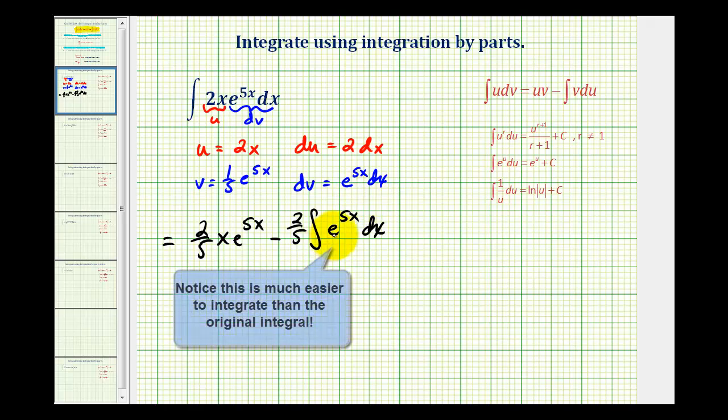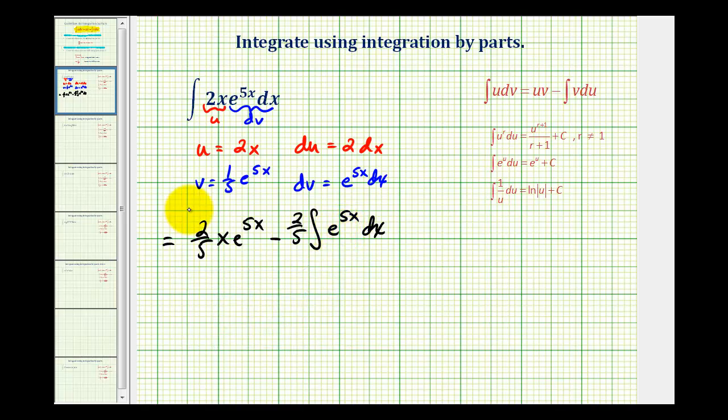And now we need to integrate e to the 5x with respect to x, which we just did. And remember because of the u substitution, we had an extra factor of 1/5th. So we'll have 2/5ths x e to the 5x minus 2/5ths times 1/5th e to the 5x plus c.